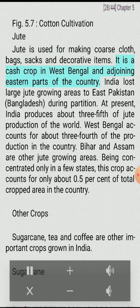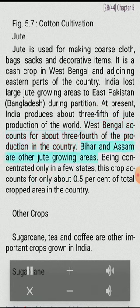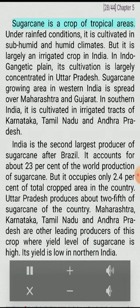Jute is used for making coarse cloth, bags, sacks, and decorative items. It is a cash crop in West Bengal and adjoining eastern parts of the country. India lost large jute-growing areas to East Pakistan (Bangladesh) during partition. At present, India produces about three-fifths of jute production of the world. West Bengal accounts for about three-fourths of production in the country. Bihar and Assam are other jute-growing areas. Being concentrated only in a few states, this crop accounts for only about 0.5% of total cropped area.